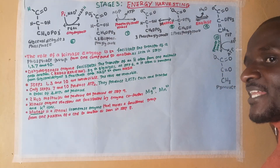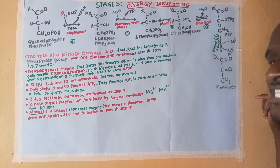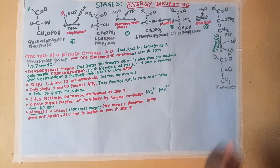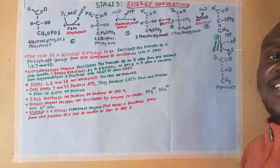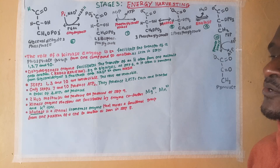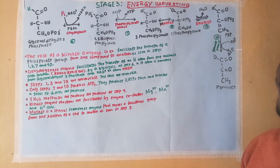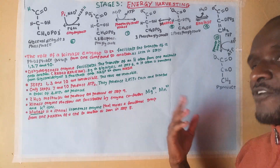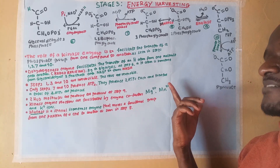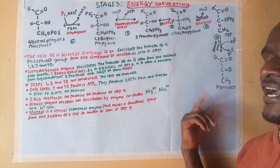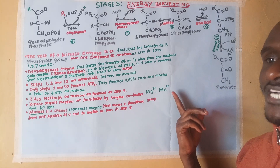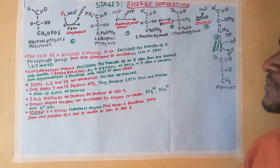However, the net ATPs produced is two. This is because steps 1 and 3 are the investment stage, where energy is consumed. Two ATPs are consumed at steps 1 and 3, and four ATPs are produced at steps 7 and 10. Therefore, the net product is two ATPs produced.